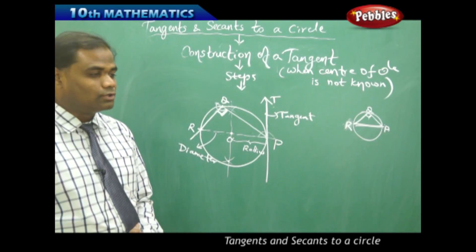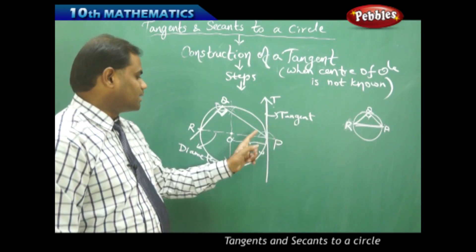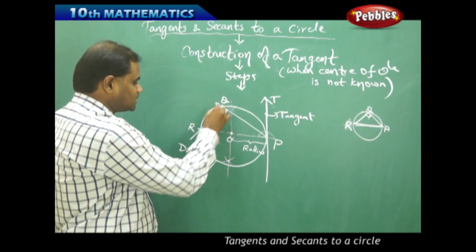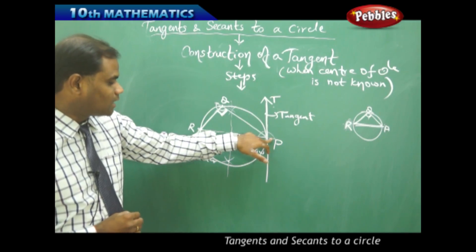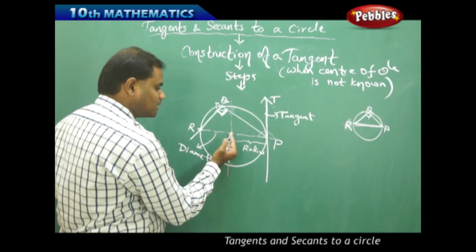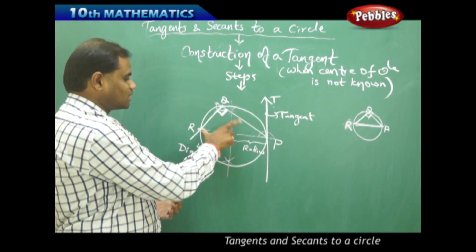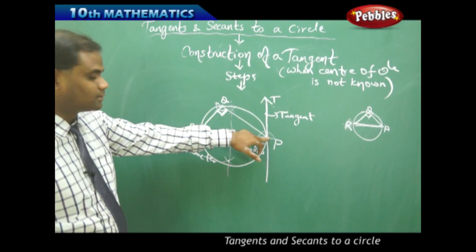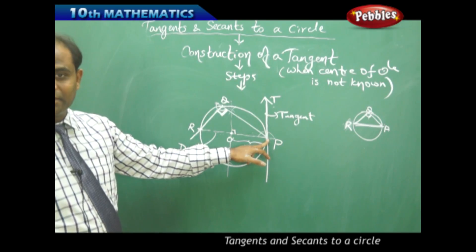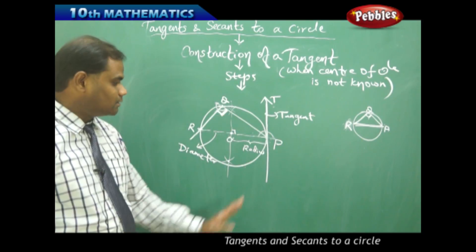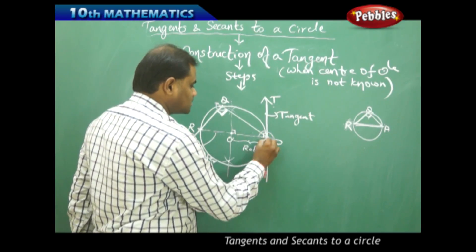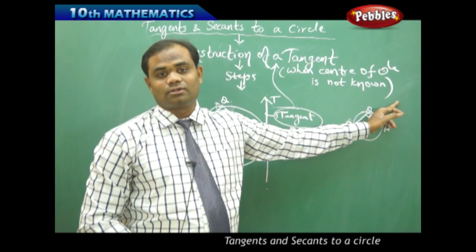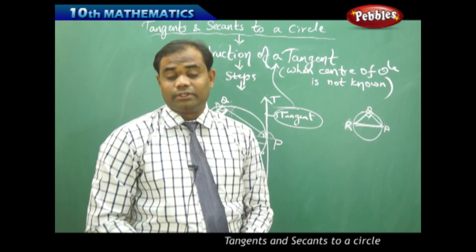Even though we don't initially know the center, we identify it by taking a chord PQ, locating point Q on the circle, joining PQ, then drawing a 90-degree angle at Q to get a third point R where the line cuts the circle. Joining PR gives the diameter. Taking more than half the diameter with a compass, I construct the perpendicular bisector to find the center. Once the center is known, OP is the radius, and measuring 90 degrees with the protractor at P gives the tangent. This is how the tangent is constructed when the center of the circle is not given.